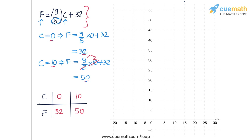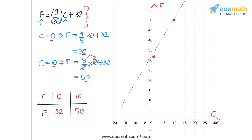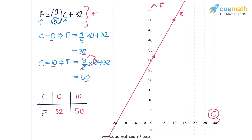In the graph, the horizontal axis represents C (Celsius) and the vertical axis represents F (Fahrenheit). The point (0, 32) lies on the y-axis between 30 and 35, and the point (10, 50) is plotted accordingly. Drawing a line through these two points gives us the graph of F = 9/5 × C + 32. Note that Celsius is on the x-axis and Fahrenheit is on the y-axis.